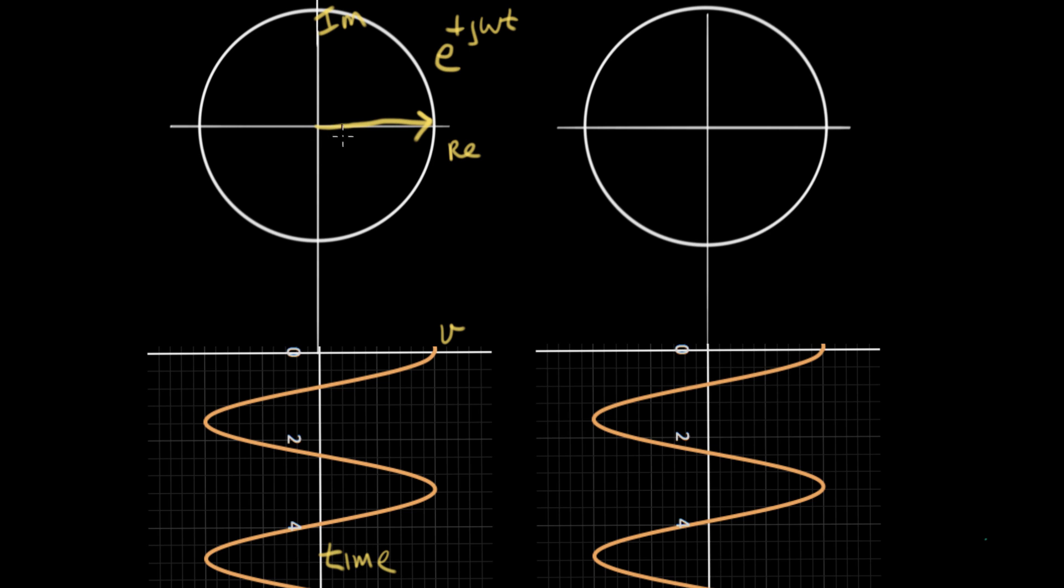When we start out at time equals zero, we project down here and we get that value right there. As time goes on, if we tip our arrow up like that to that point, then we project down to the cosine curve right here. If we let our arrow go all the way to the other side, it projects down to this point on the cosine curve.